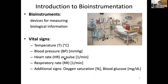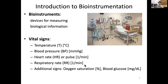The third vital sign is heart rate, written as HR or pulse, which is the number of heartbeats per minute. Another is breathing rate, or respiratory rate (RR), the number of breaths per minute. Additional signs include oxygen saturation in the blood, expressed as a percentage, and blood glucose, measured in milligrams per deciliter.